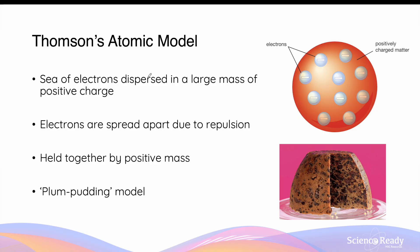Thomson proposed that an atom consists of a sea of electrons that is evenly dispersed in a large mass of positive charge. In the atom, the electrons are evenly spread out due to the natural electrostatic repulsion between them. However, these electrons are held together in the atom due to the positive mass. Due to the nature of the atom, this is often referred to as the plum pudding model, where the electrons are represented by the plum and the positive mass is represented by the pudding.